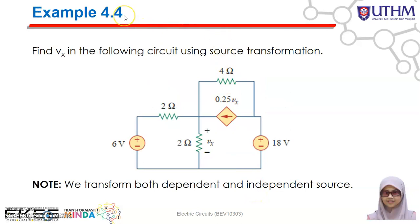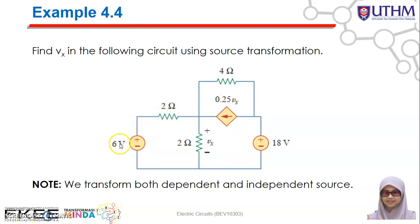Next, Example 4.4: find the value of Vx using source transformation. Vx is the voltage across the 2-ohm resistor. You have 3 different sources — two independent sources and one dependent source. Note that you need to transform both dependent and independent sources. However, you can only transform two of them: one current source in parallel with a resistor, and one voltage source in series with a resistor. The third source has no resistor in series, so it cannot be transformed.